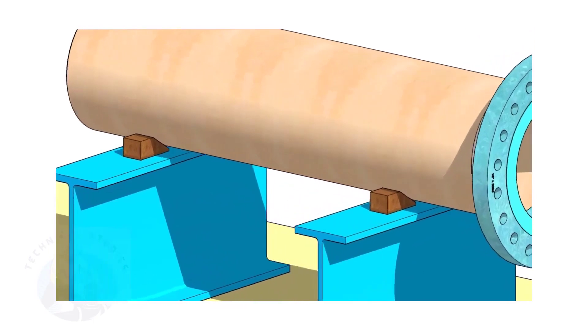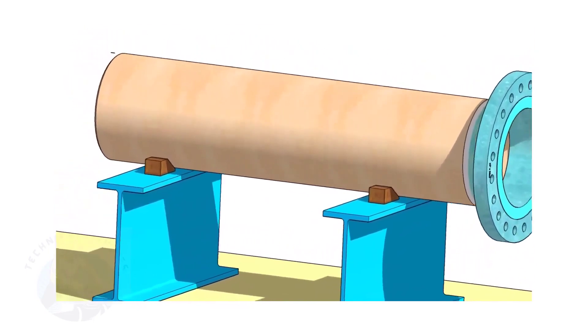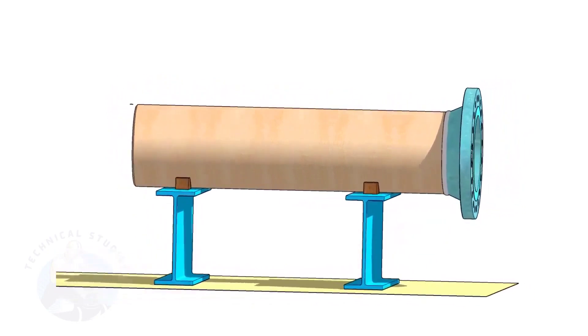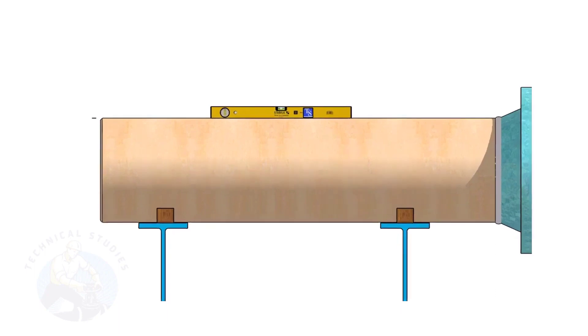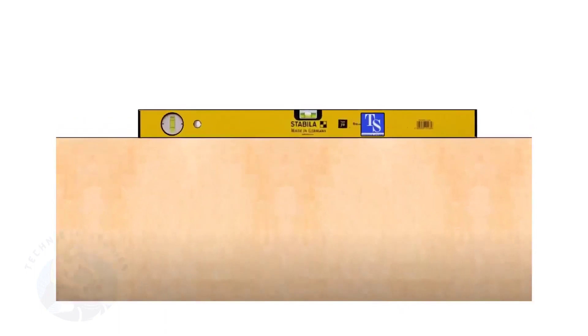Provide proper supports on both sides of the pipe to prevent rotation. Correct the level of the pipe. Check the plumbness of the flange a second time.